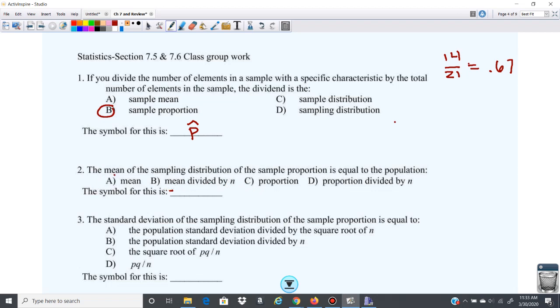Yes, A. This one is A. So the mean of the sampling distribution is equal to the mean of the population. So the symbol for this is the mean of P hat.